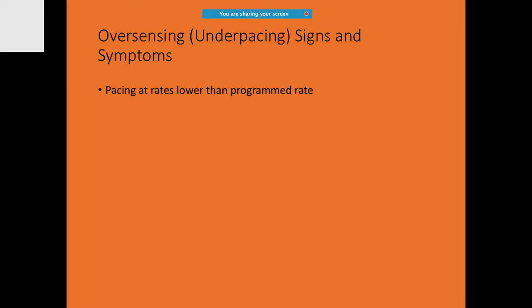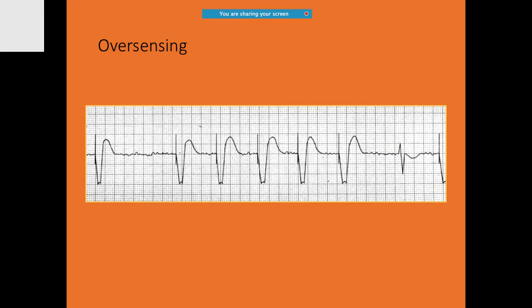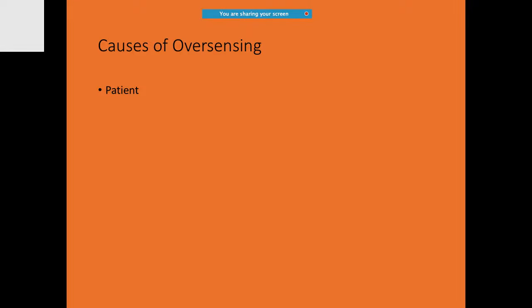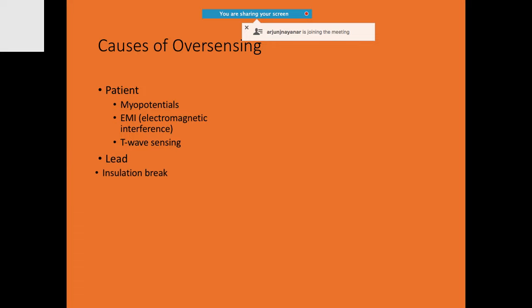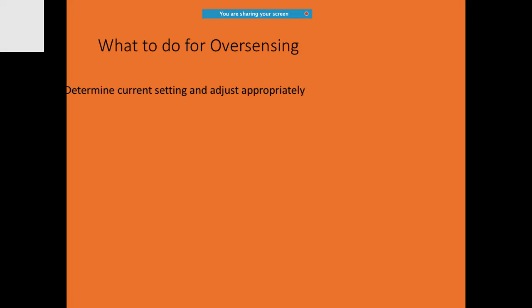With oversensing, problems include: pacing at rates lower than programmed, erratic prolongation of pacing interval, and persistent oversensing that may reappear. Oversensing is sensing signals that should not be sensed — for example myopotentials, electromagnetic interference, or the phenomenon of crosstalk if the pacemaker is not programmed correctly.